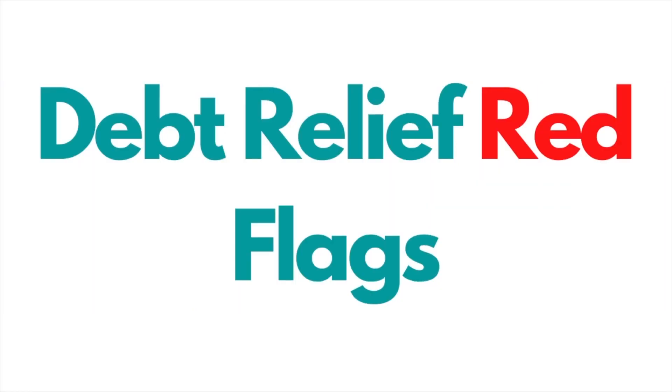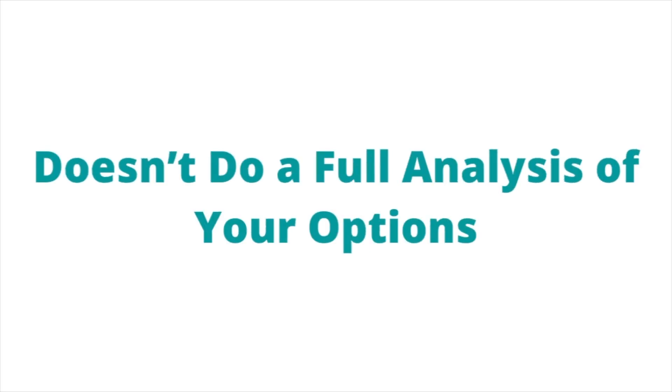Let's get into the debt relief red flags that you really need to look out for. There's eight of these that you need to look out for when choosing a debt relief company. First, look out for a debt relief company that doesn't do a full analysis of your options. For example, let's say you qualify for Chapter 7 bankruptcy and it's a lot less expensive. What if the debt relief company doesn't even make you aware that there are other options? It's important to understand the other options, so hopefully the debt relief company that you're looking for does that.